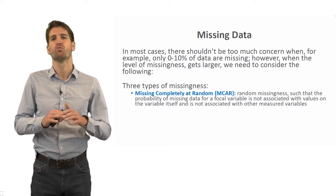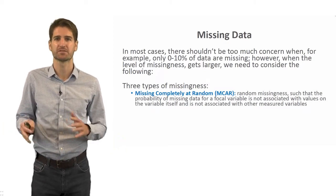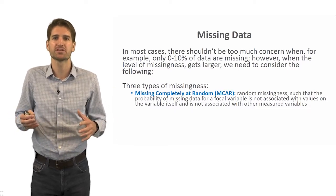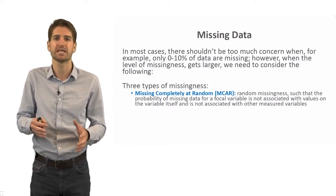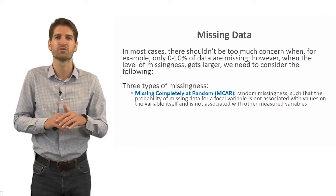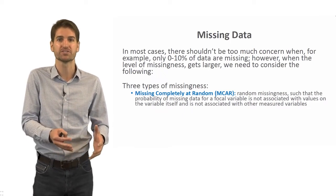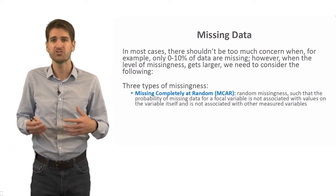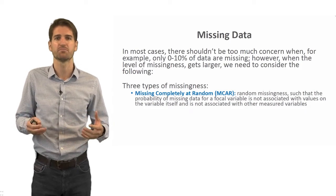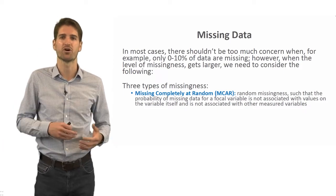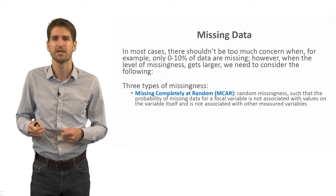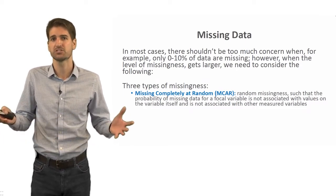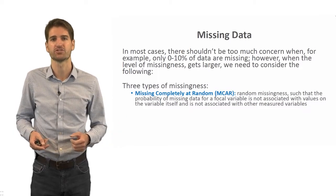The first type — missing completely at random, or MCAR — means there is no systematic missingness; it is essentially random. The probability of missing data for a focal variable is not associated with values on that variable itself and not associated with other measured variables. It's just a random occurrence that some people are missing values. This is really the best situation you could find yourself in.